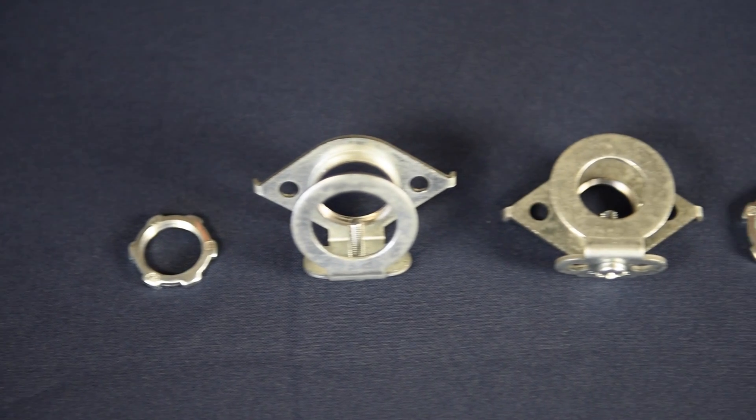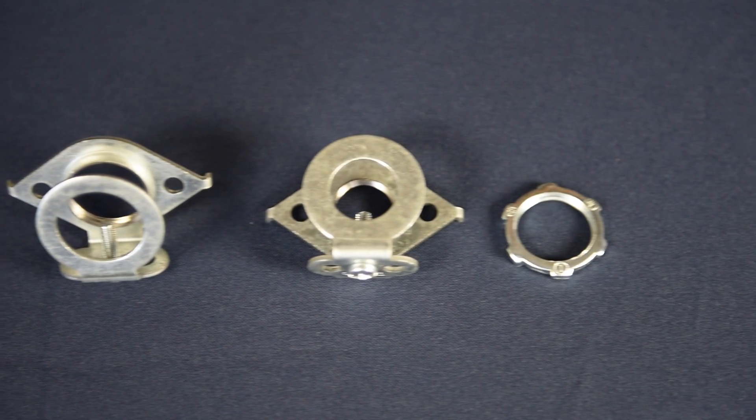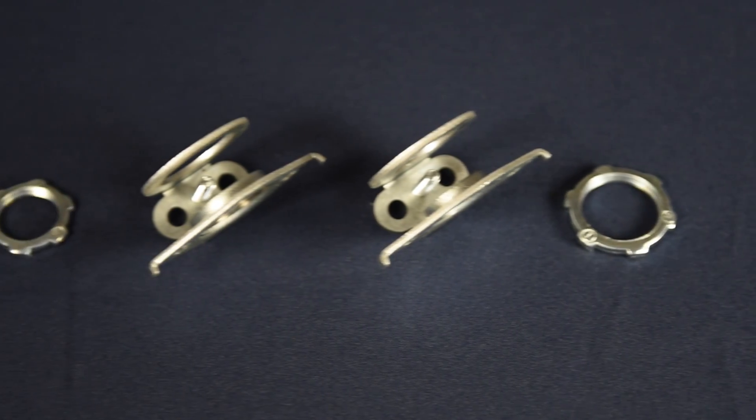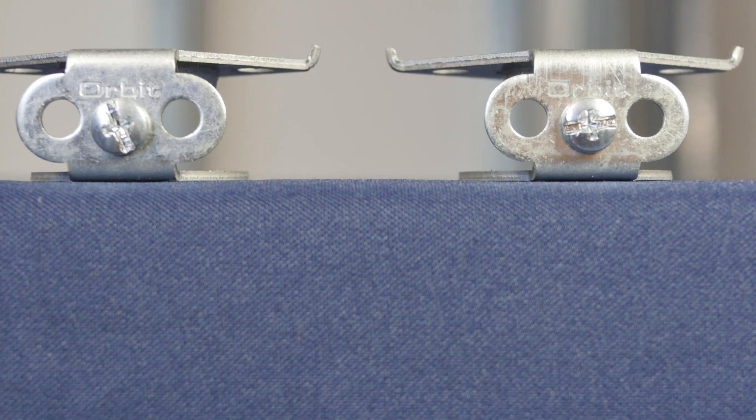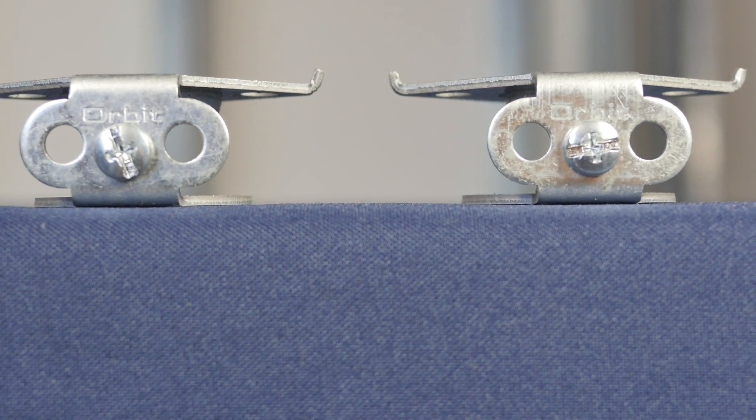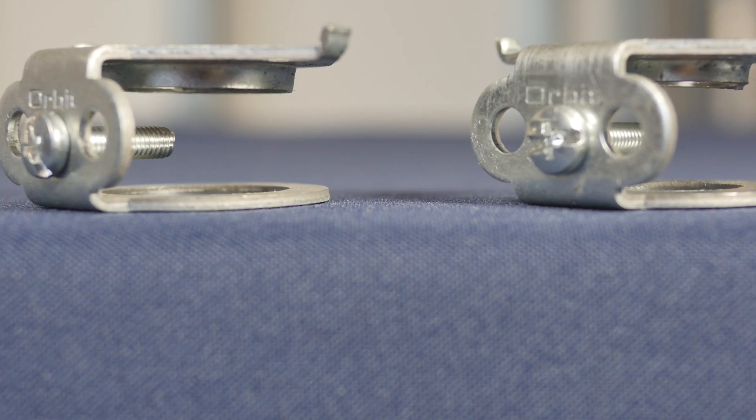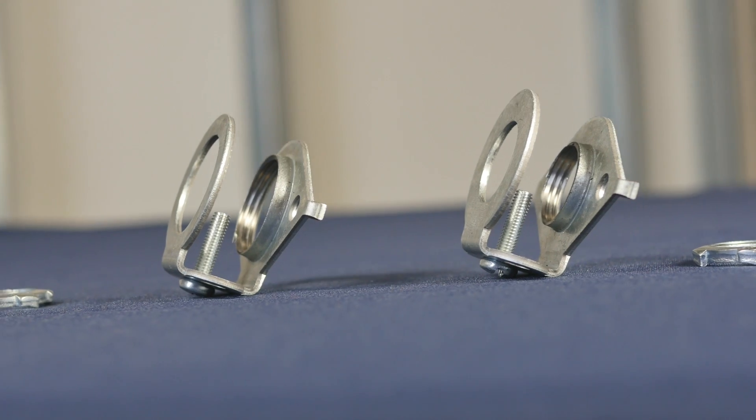Orbit presents the exclusive Conduit Locking Connector with Seismic Wiring Holes, also known as the CLCSL. This product offers the reliability and safety you need to prevent fixtures from becoming loose or rotated due to motion or seismic disturbances.